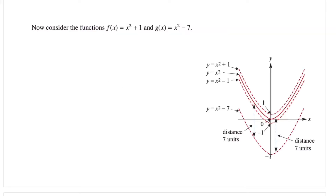Now moving on, let's consider these two functions. We have f(x) = x² + 1 and g(x) = x² − 7. Let's find the derivatives respectively. The derivative of f(x) is f'(x) = 2x. How about the derivative of g(x)? That's going to be 2x again. Notice that the two functions have the same derivative function. However, their original functions are different because they have different constants. In f(x) the constant is +1, whereas in g(x) the constant is −7. So the graphs of these two functions can be obtained from each other by moving up or down parallel to the y-axis — there's only a change in the y-intercept.